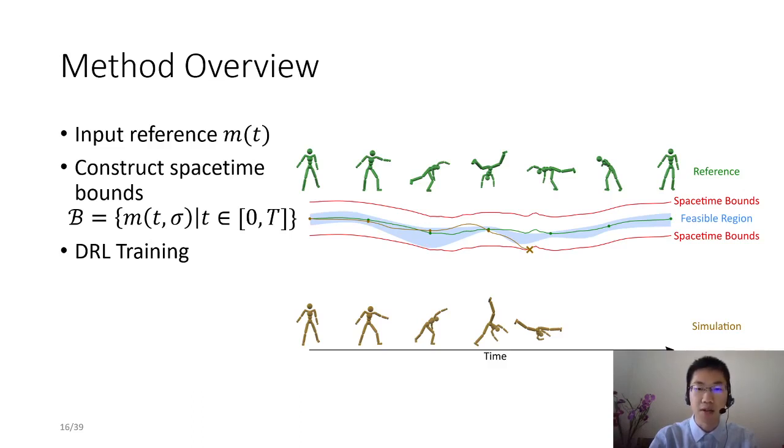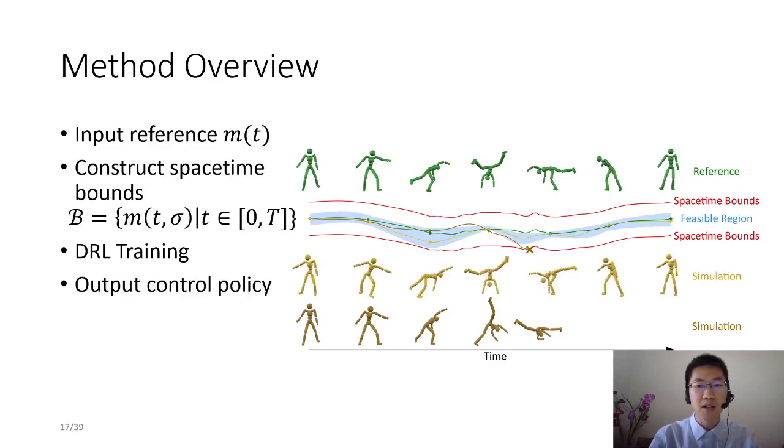Once the trajectory violates spacetime bounds, we terminate the current episode immediately. If the learning converges, then the final optimal controller can guarantee to generate trajectories within the feasible region.